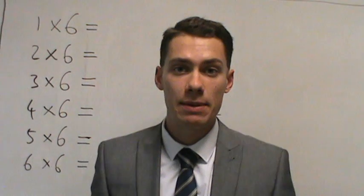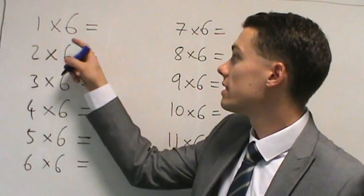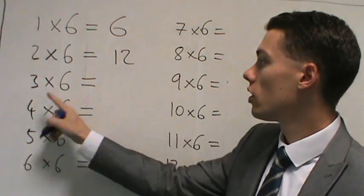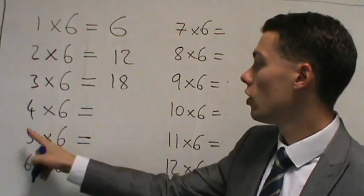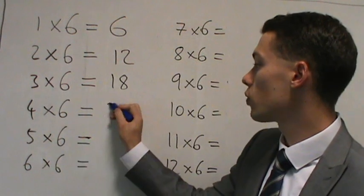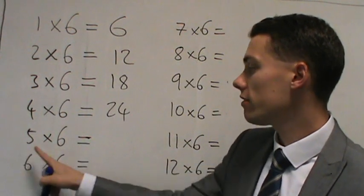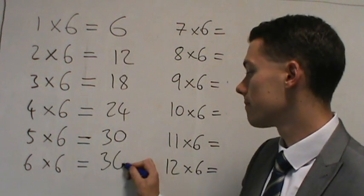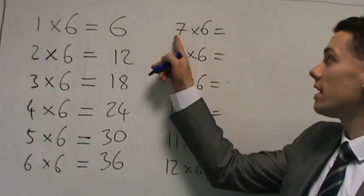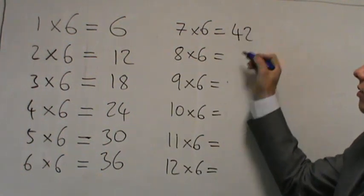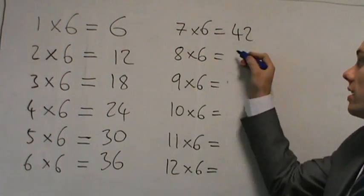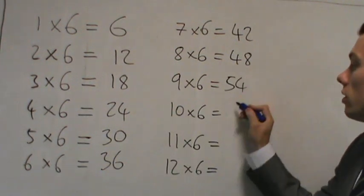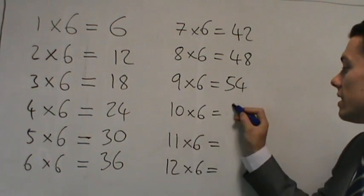We're learning our six times tables. 1 times 6 is 6, 2 times 6 is 12, 3 times 6 is 18, 4 times 6 is 24, 5 times 6 is 30, 6 times 6 is 36, 7 times 6 is 42, 8 times 6 is 48, 9 times 6 is 54, 10 times 6 is 60.